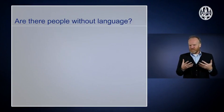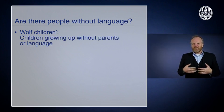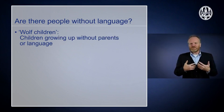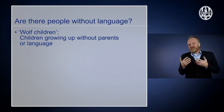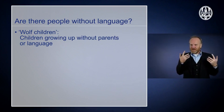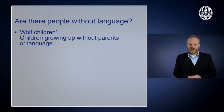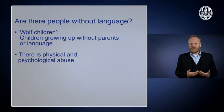Examples of people suffering from these very strong social impediments are so-called wolf children. They're children who grew up without their parents or where their parents didn't want to speak to them for some strange reason. They may have been deaf children with hearing parents, where the hearing parents were ashamed of having deaf children. That, unfortunately, sometimes happens. Or there may be cases of physical and psychological abuse.